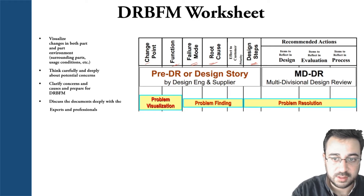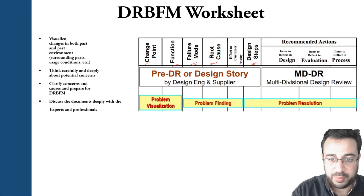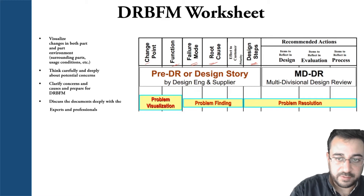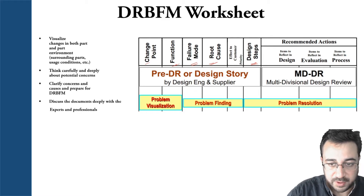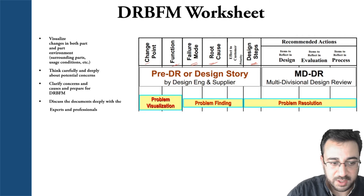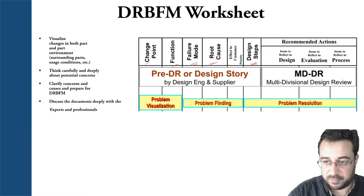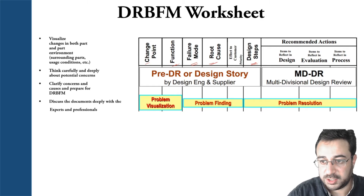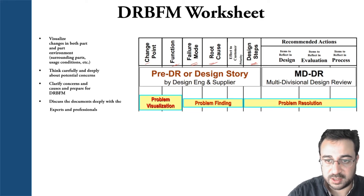Secondly, you will use that worksheet to help you think carefully and deeply about potential concerns. You will go through the process of studying each part and the environment around it to identify which part or specified property of that part is considered a potential concern. Then you clarify the concerns and causes, discuss those documents deeply with experts and professionals through design review meetings following the GDQ process, and come out with recommended actions to avoid any potential concerns expected in the future.